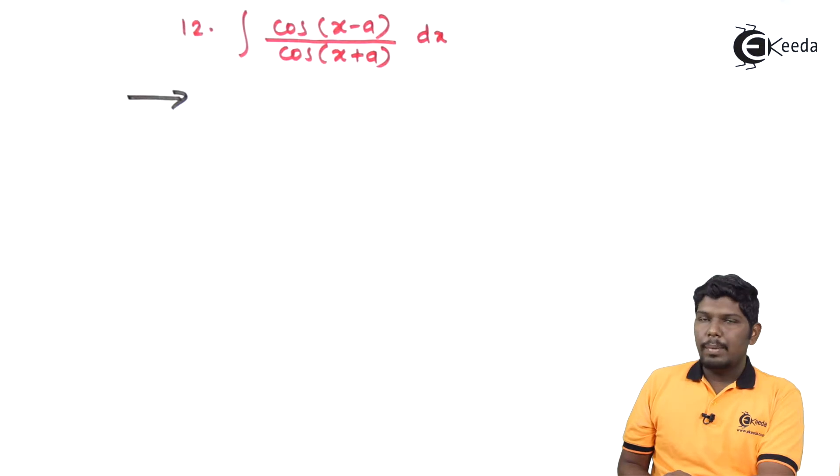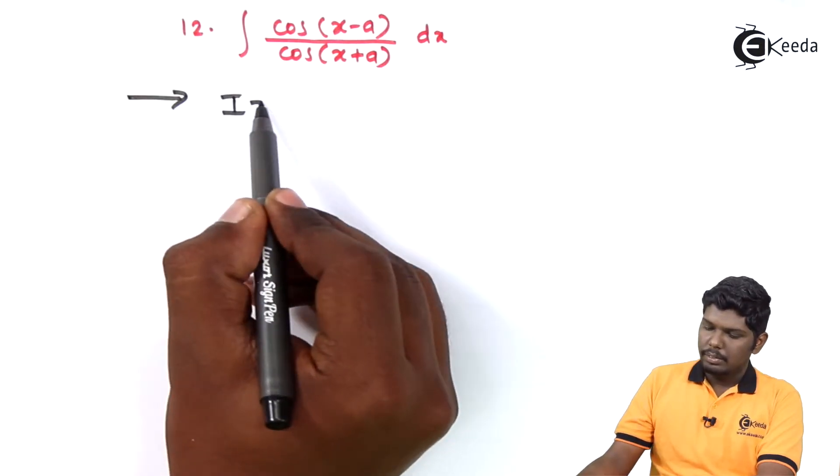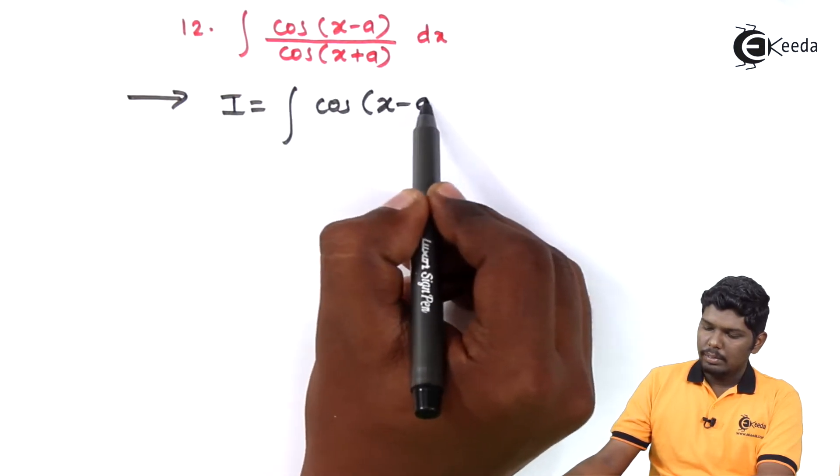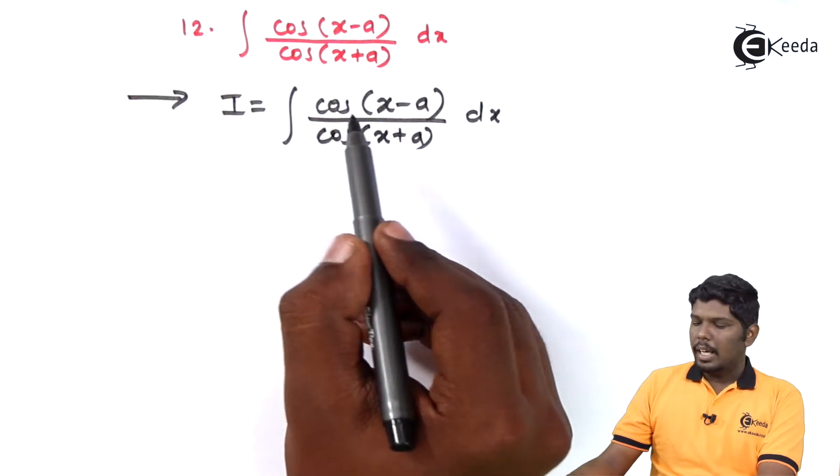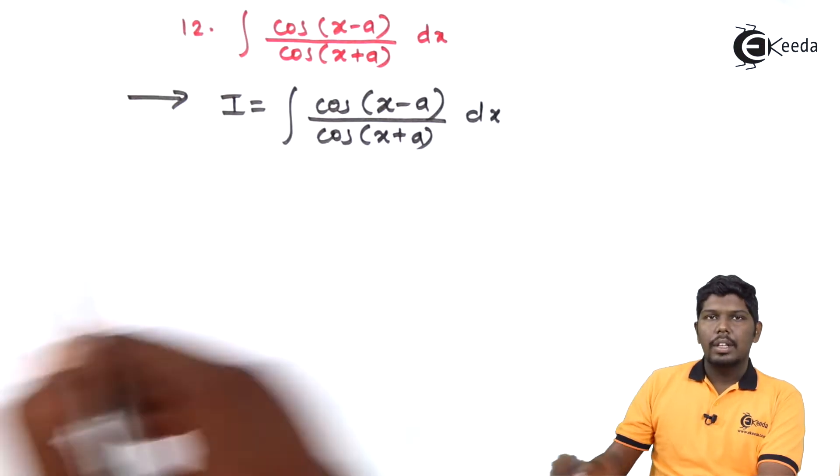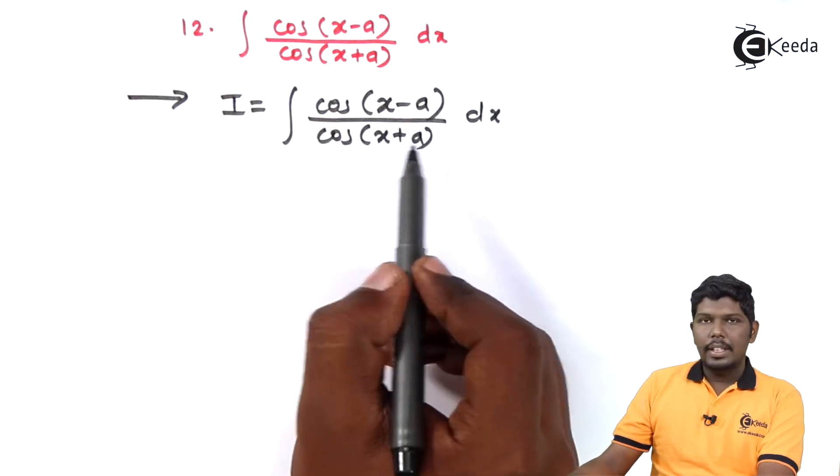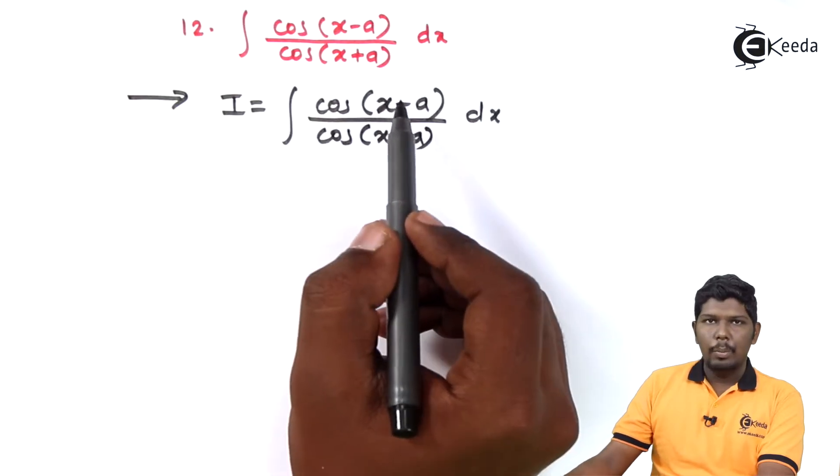Integral cos(x-a) upon cos(x+a) dx. Here you can see friends, again we have the type cos upon cos, therefore we are going to adjust this angle x plus a in the numerator.